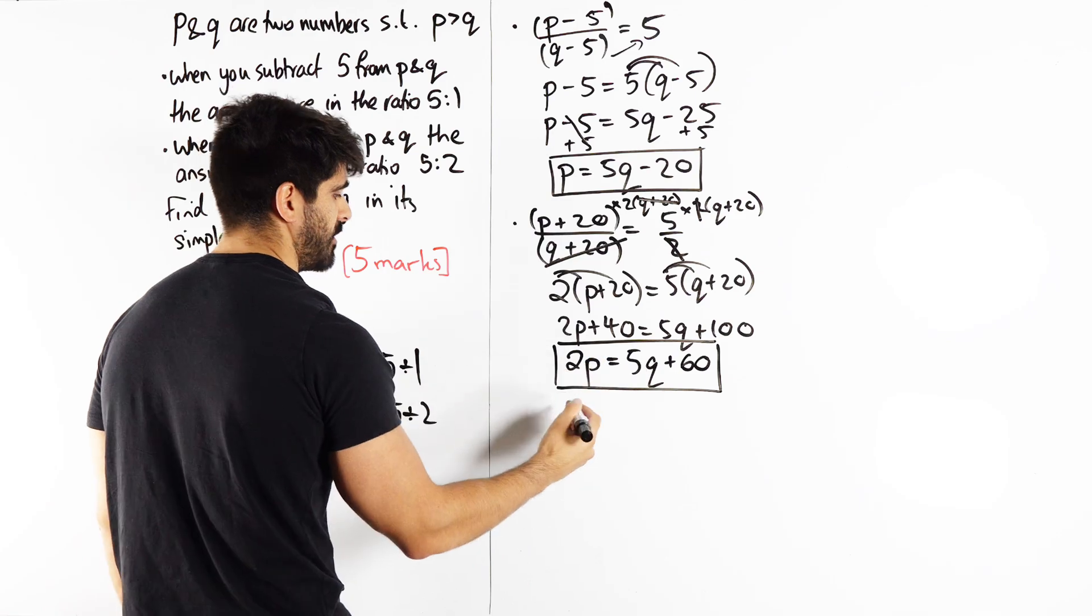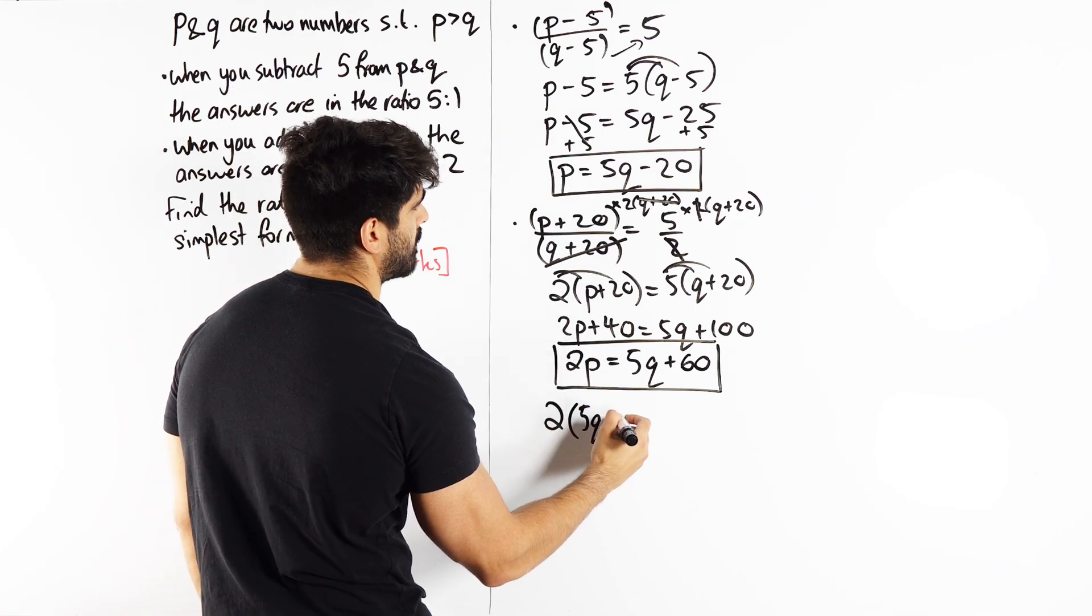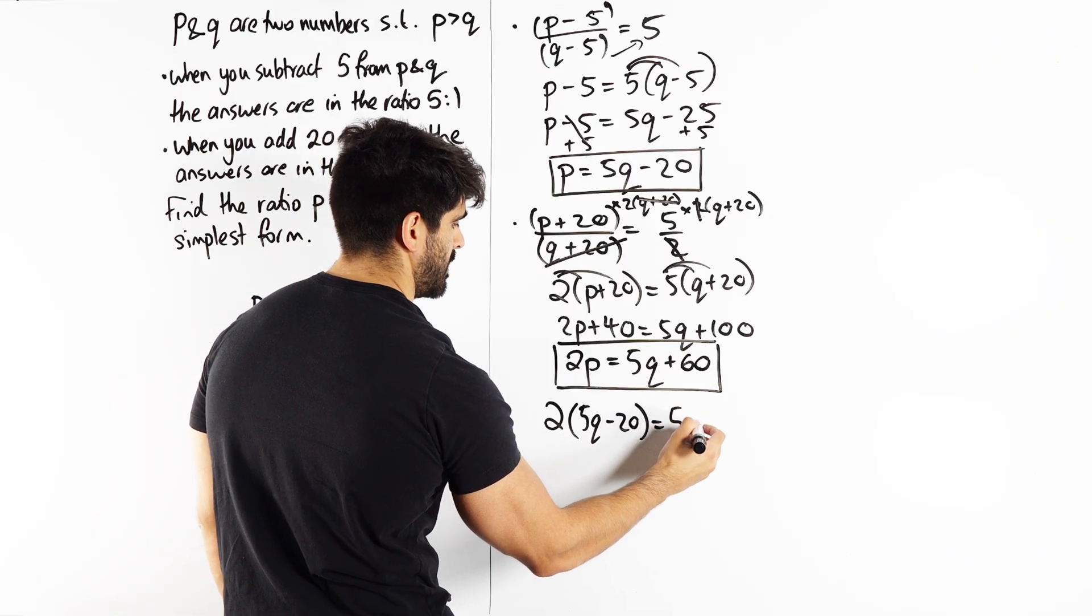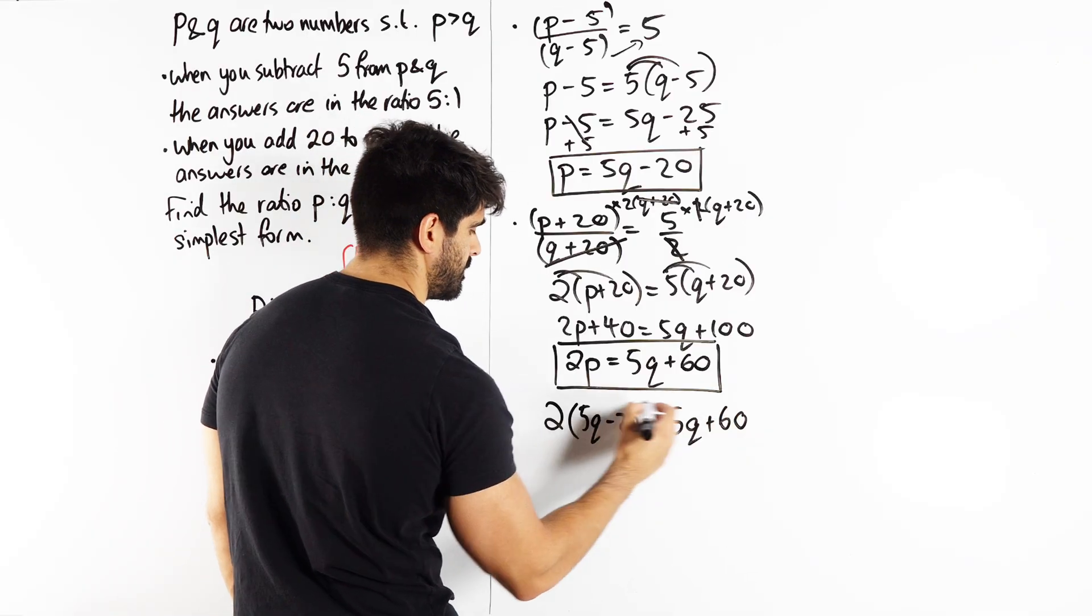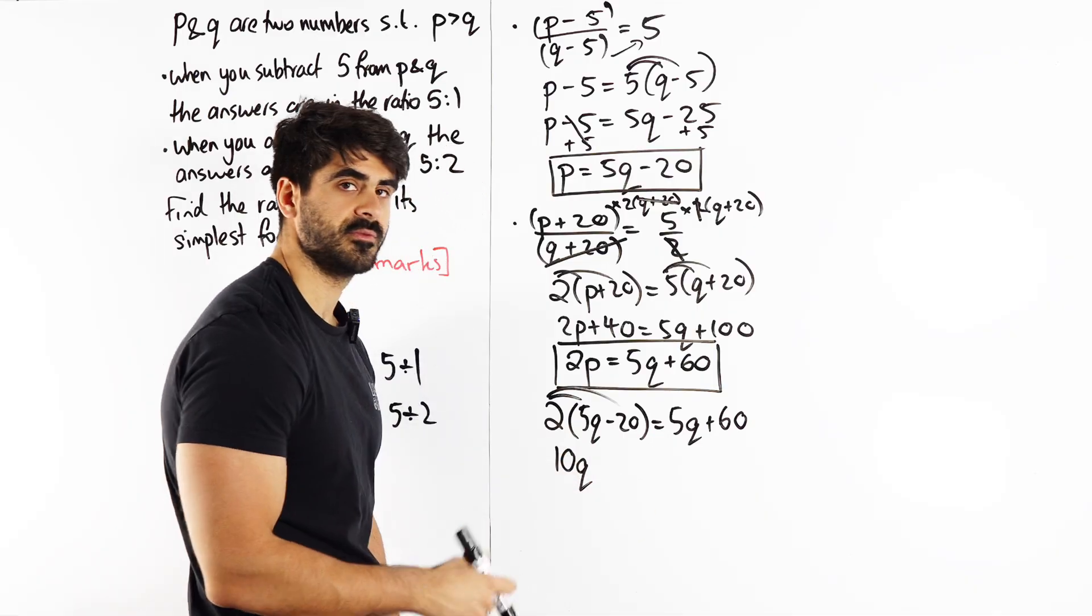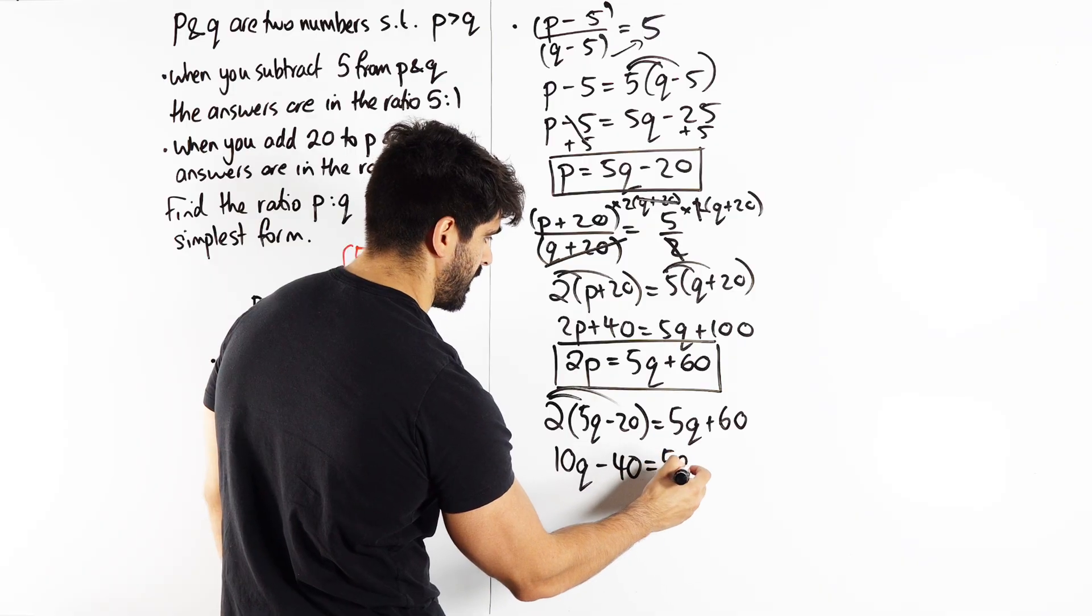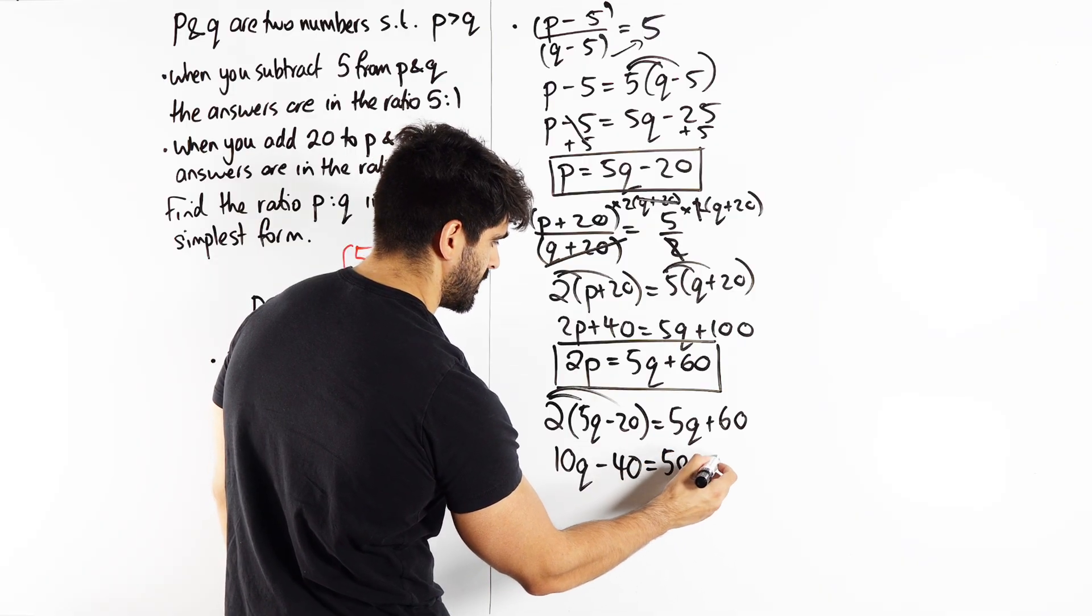P is this, just sub it right in. 2 lots of P which is 5Q minus 20 is 5Q plus 60. Expand. 10Q minus 40 is 5Q plus 60.